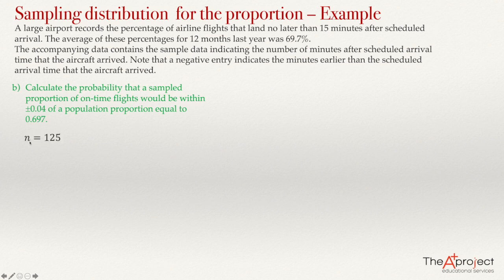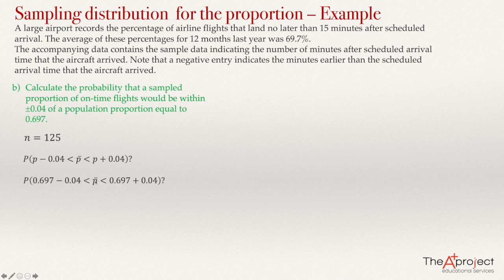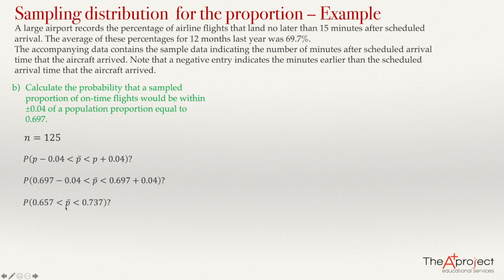To answer question B, we have n equals 125 and the question is: what is the probability that the sample proportion p̄ is greater than or equal to the population proportion minus 0.04 and less than or equal to the population proportion plus 0.04? Here p equals 0.697. So the question becomes: what is the probability that p̄ is between 0.697 minus 0.04 and 0.697 plus 0.04, which is between 0.657 and 0.737?